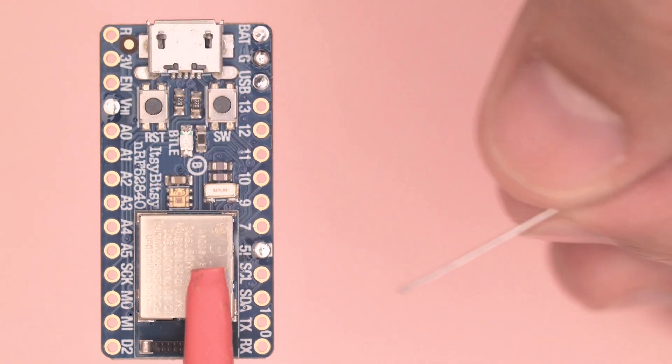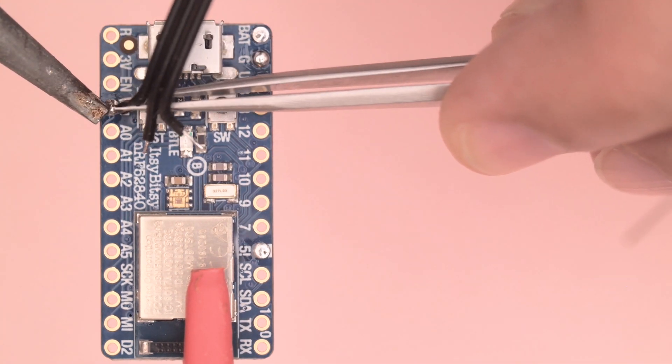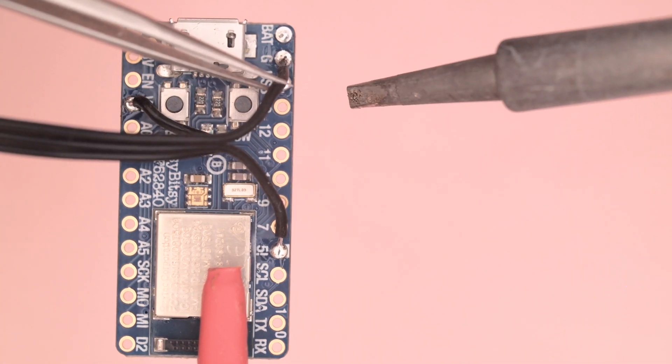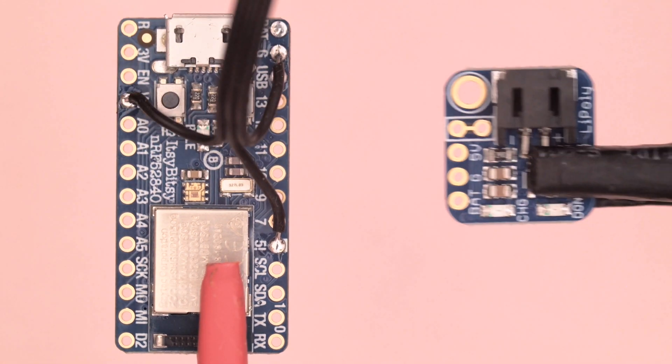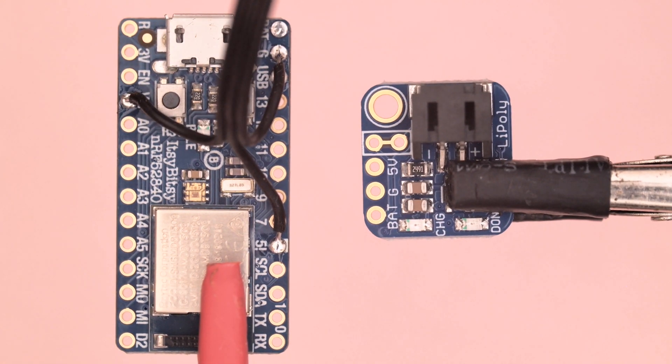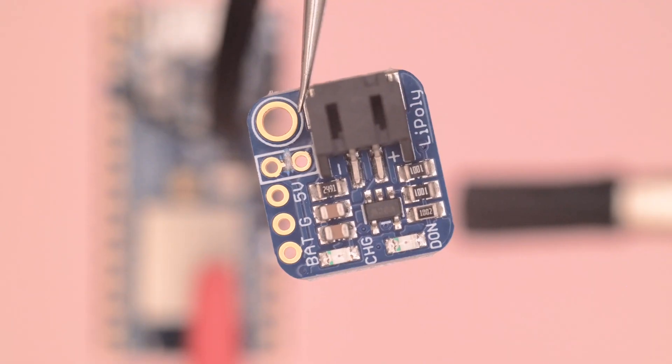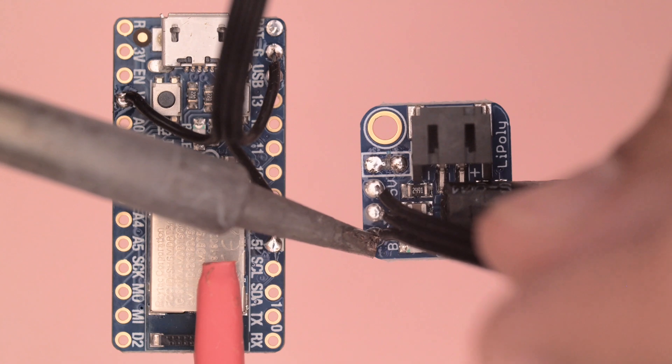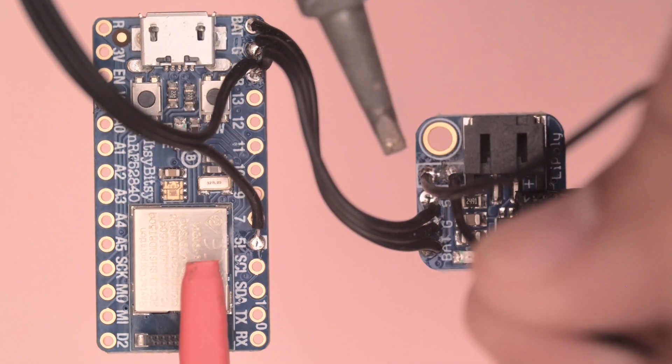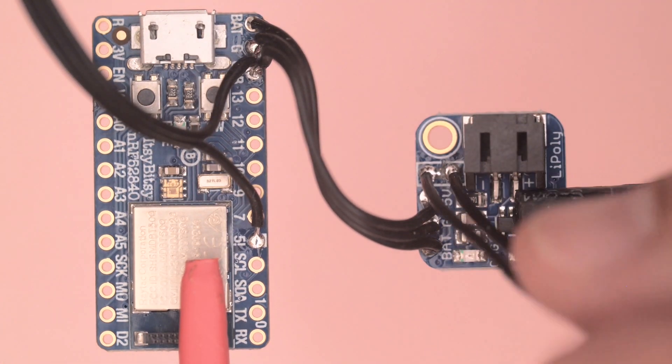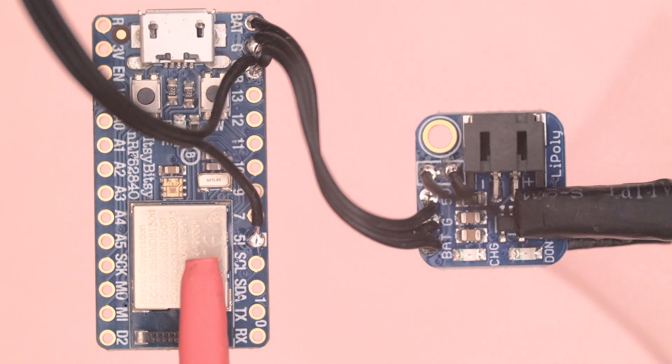The Itsy Bitsy LiPo backpack can then be wired next. Cut the trace for the switch with a pair of flush cutters. Using the mounting hole as an anchor, the LiPo backpack is wired to the BAT, ground, and USB pins on the Itsy Bitsy board. Two wires are soldered to the switch pins on the LiPo backpack.